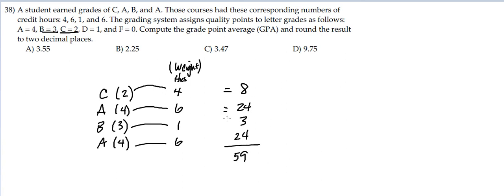We add those up - the multiplication of the hours times the letter grade points. Then we divide by the sum of the weights or the hours. We have 10 plus 7 equals 17, so we take 59 divided by 17 and we'll get our answer.